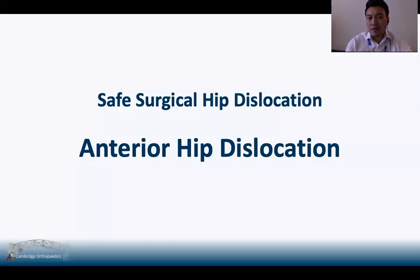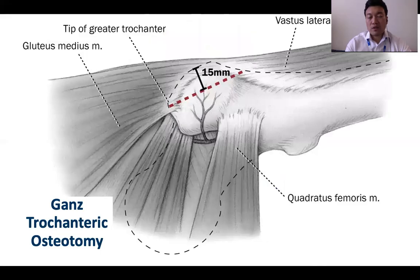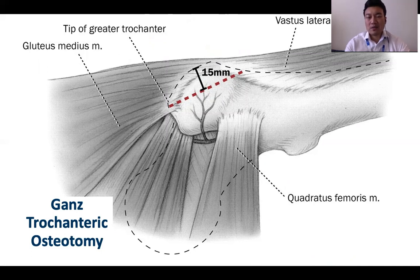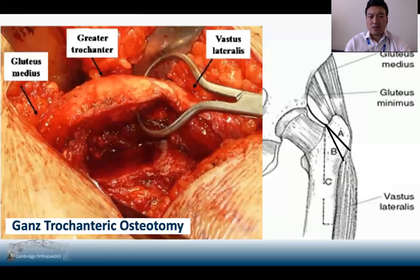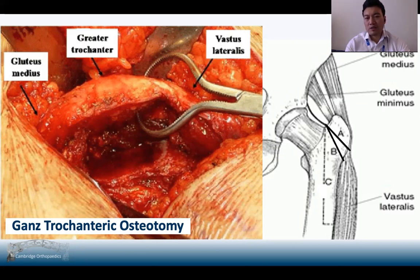The safest way to perform a surgical hip dislocation is through an anterior hip dislocation. This is achieved by performing a GANS trochanteric osteotomy, releasing the abductor mechanism anteriorly to allow anterior dislocation of the hip. The key to the GANS trochanteric osteotomy is to ensure the abductor mechanism remains continuous — that's the gluteus medius attached to the greater trochanter, attached to the vastus lateralis. If those three structures remain in continuity, you'll be fine.